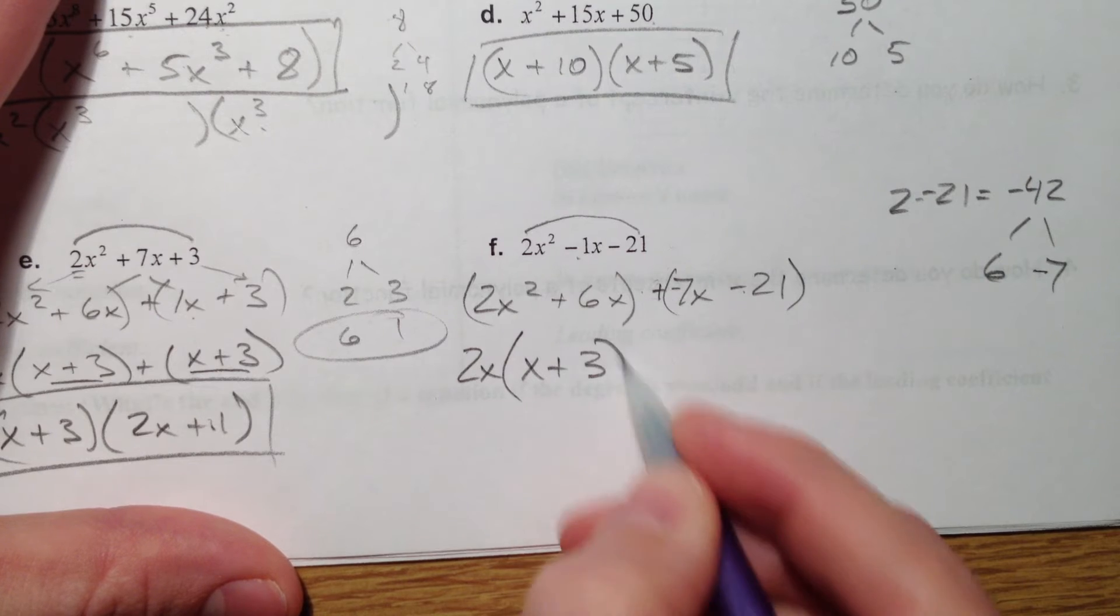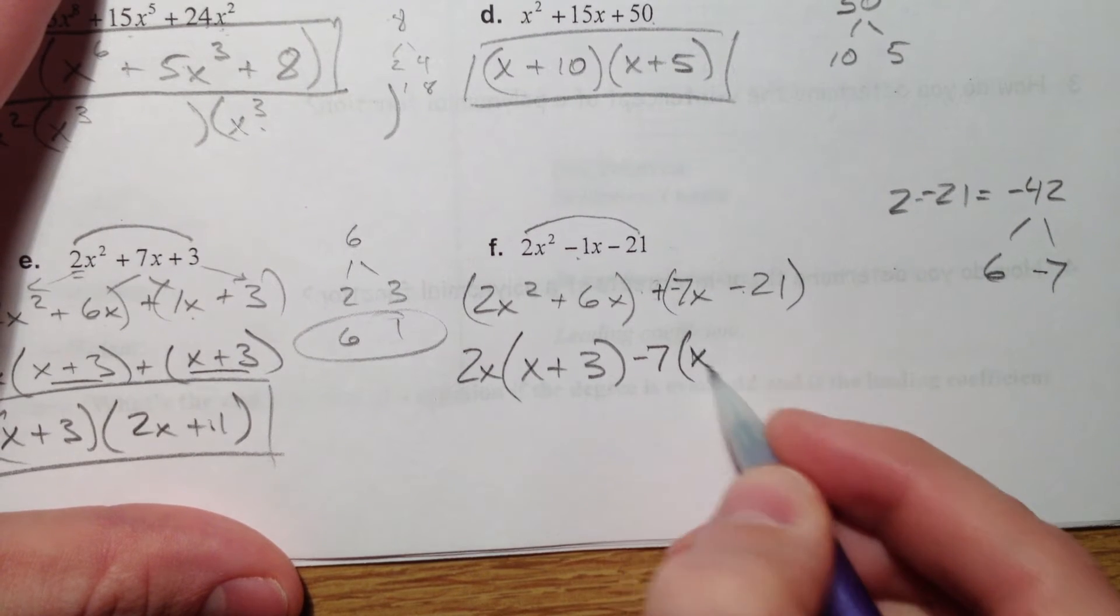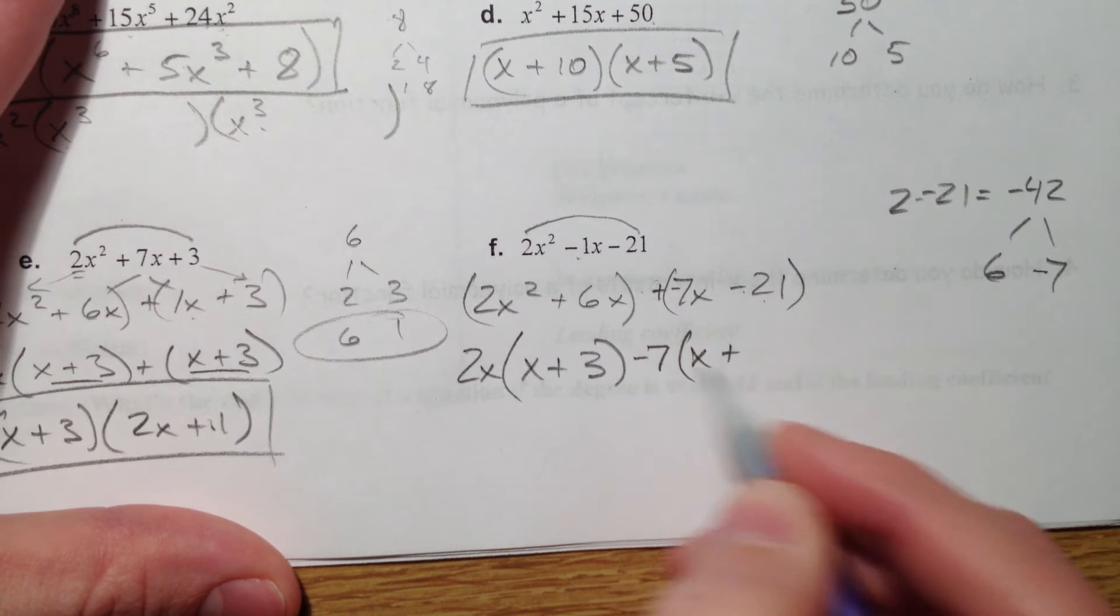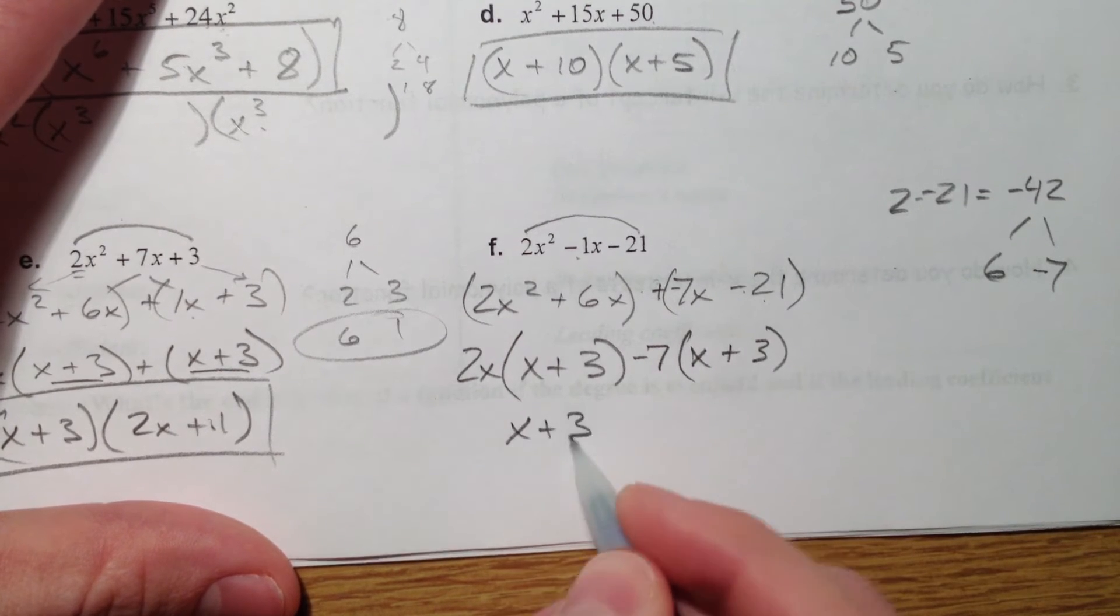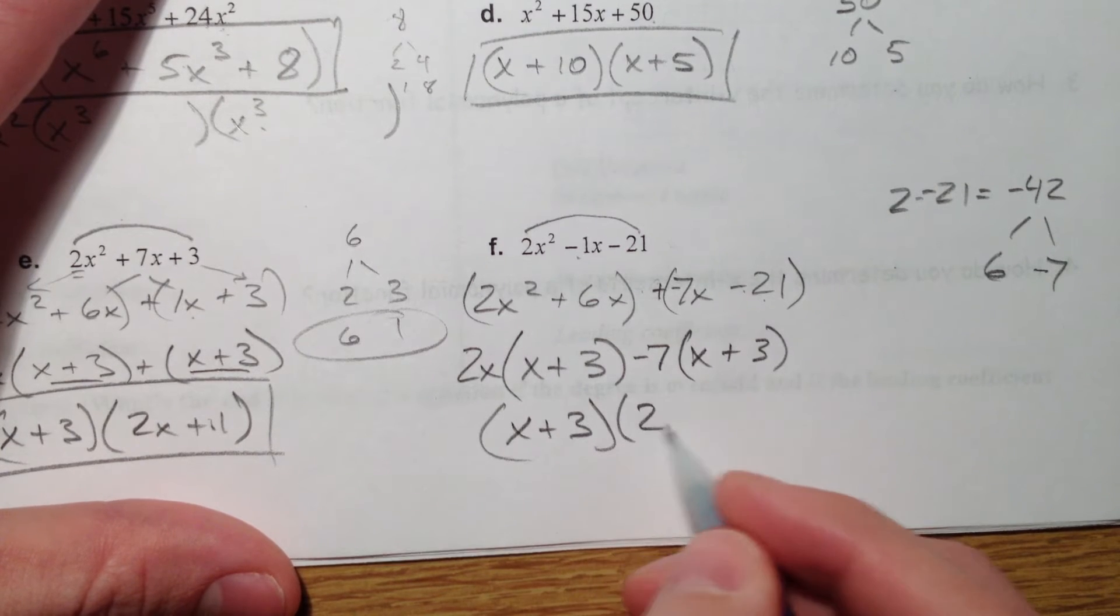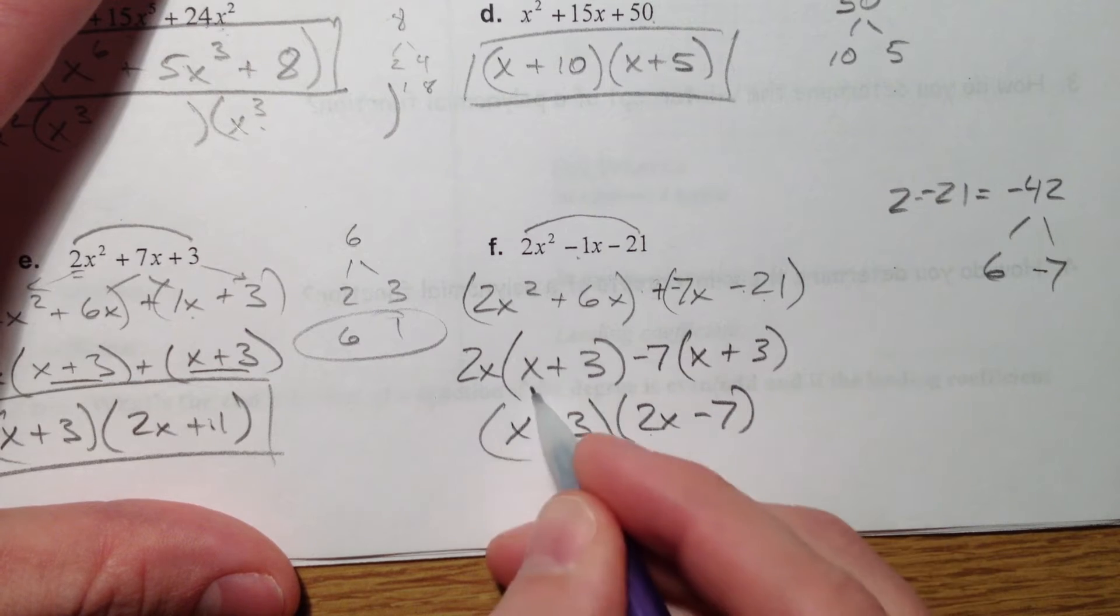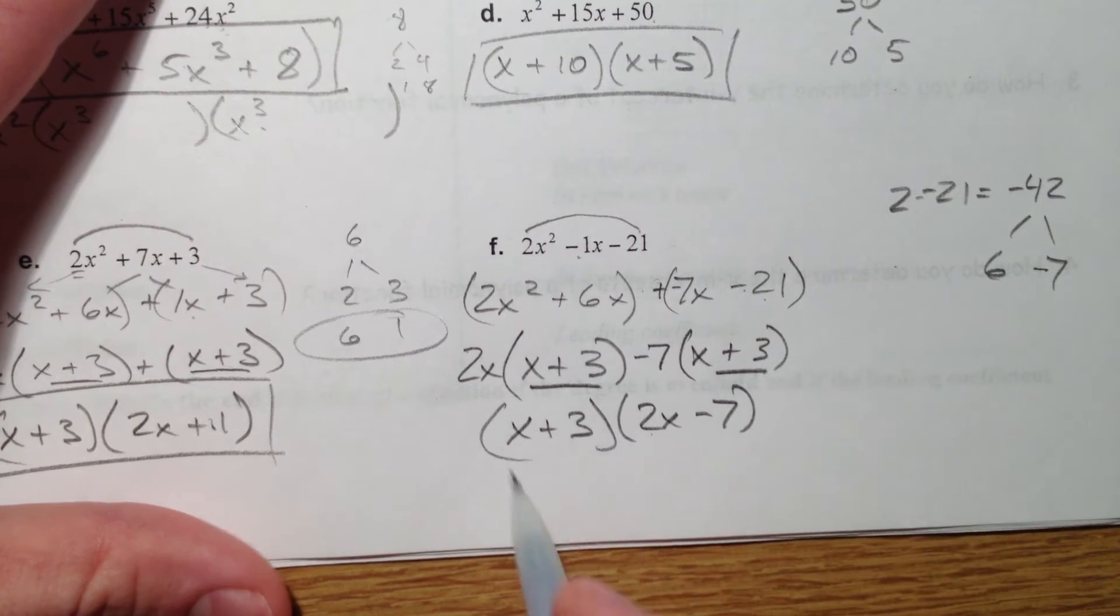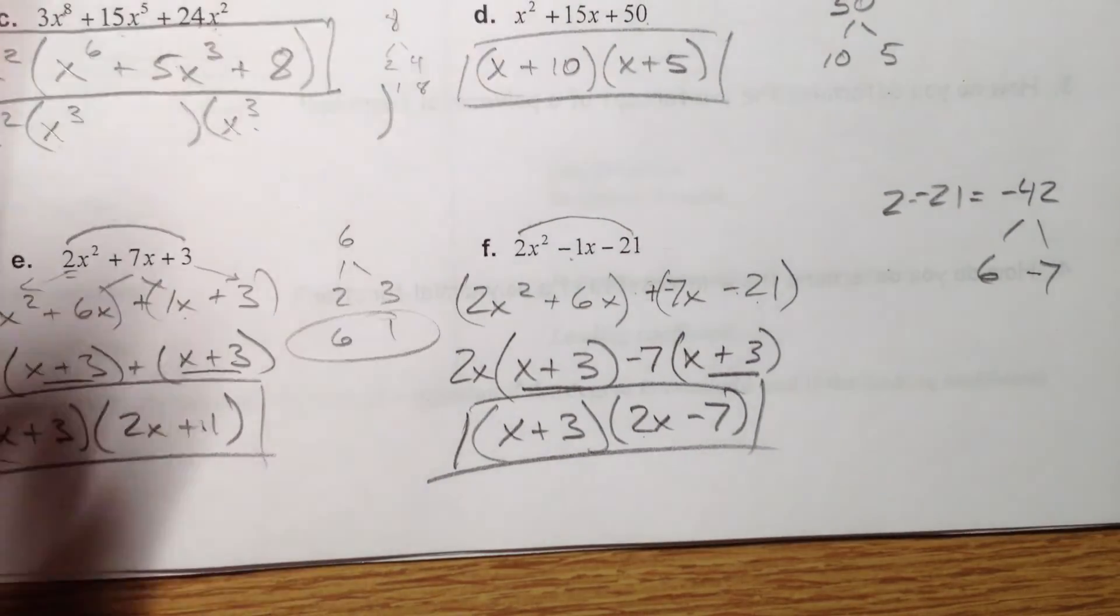It will be minus 7x, but it would be minus and negative 21. And so you have to remember to change the sign. Pull out the 2x. You get x + 3. Pull out a negative 7, and you get x, 21 divided by negative 7 is x + 3. So x + 3. We have 2x - 7 left after we pull out the x + 3. And there you have your basic factoring techniques. That's what we knew.